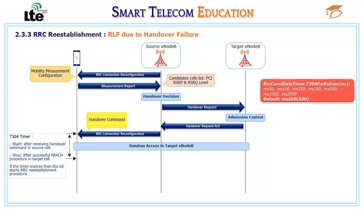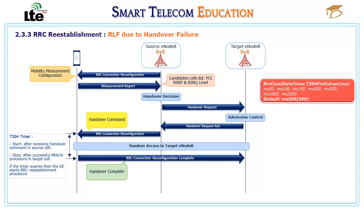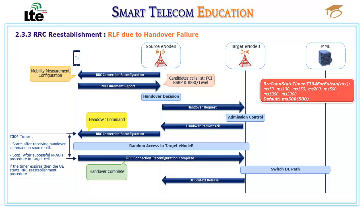If the timer expires, the UE initiates an RRC reestablishment procedure. If the PRACH is successful in the target eNodeB, the UE sends a Handover Complete message to the target eNodeB. That switches the downlink path from the source eNodeB to the target eNodeB, and sends a UE Context Release to the source eNodeB.